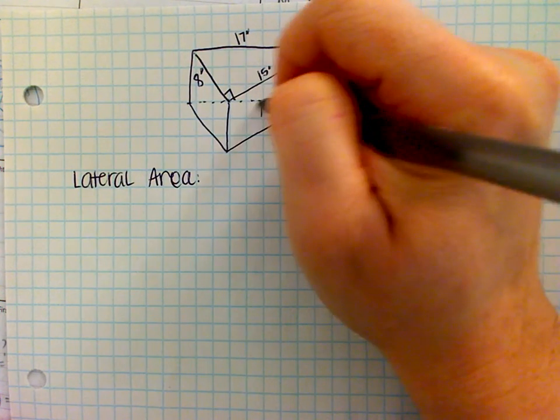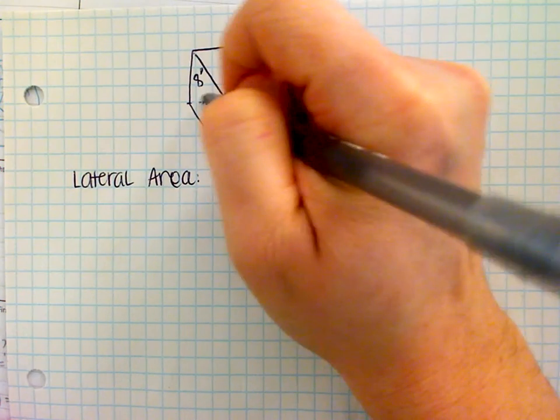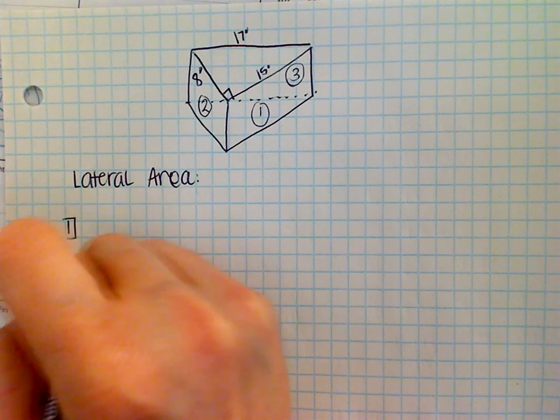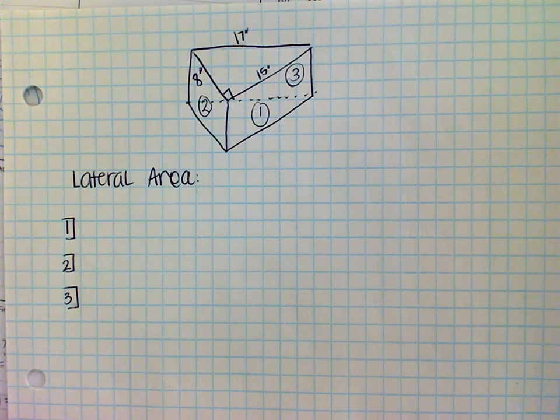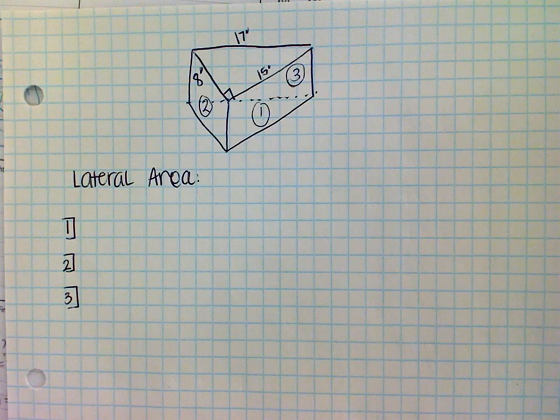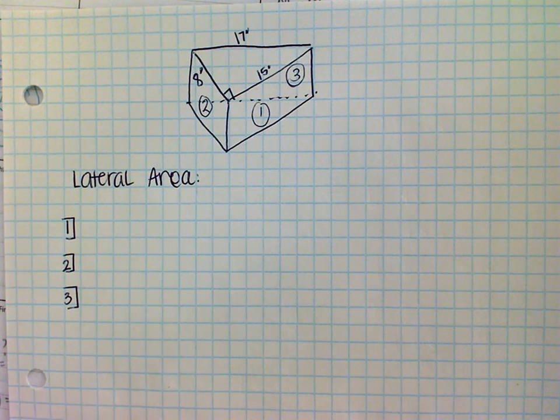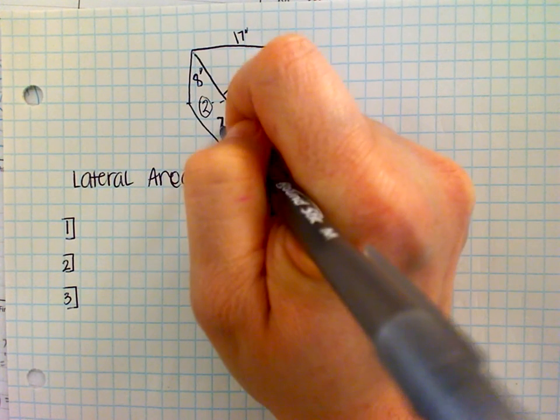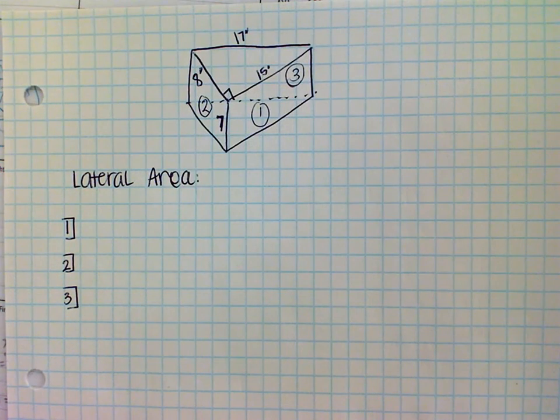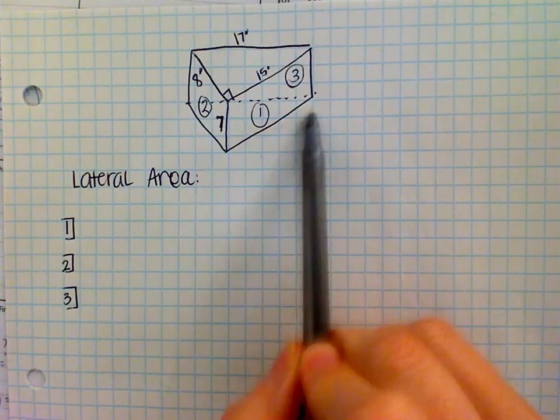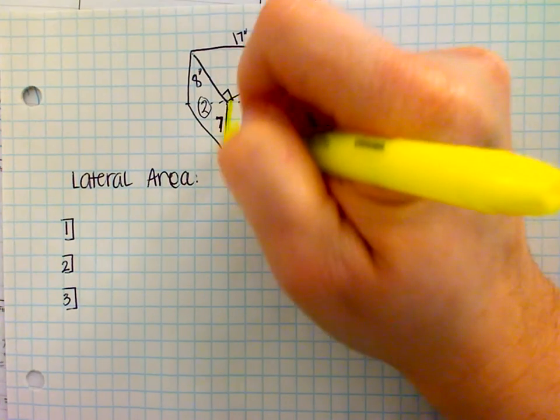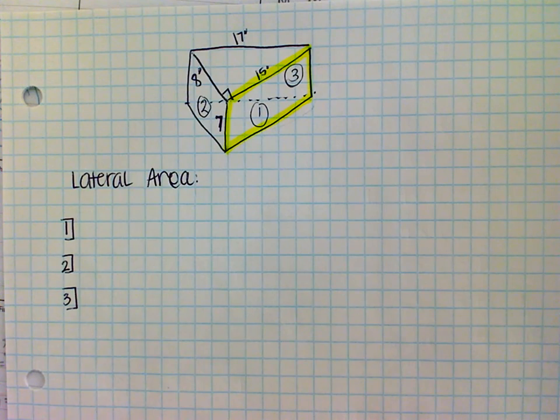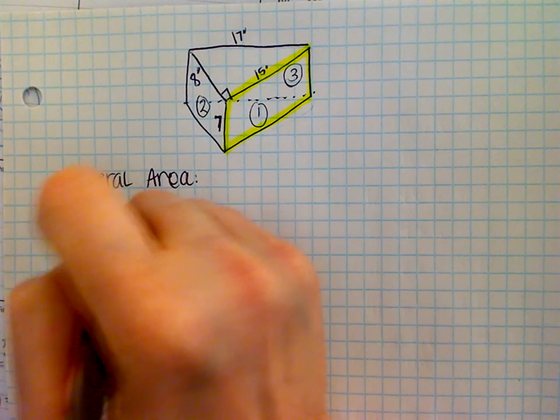So we're going to name this one face one, this one face two, and in the back is going to be face three. So can somebody tell me the dimensions of face one, please? Probably would help if you knew how high it was, right? Think it's seven high? Okay. What are the dimensions of face one, please? That's face one. Finn? Seven by fifteen. Seven by fifteen, okay.